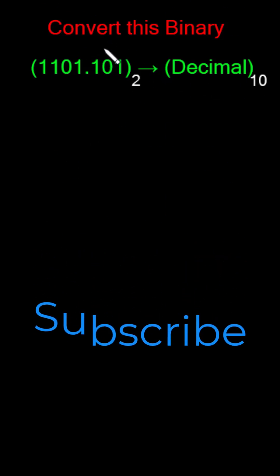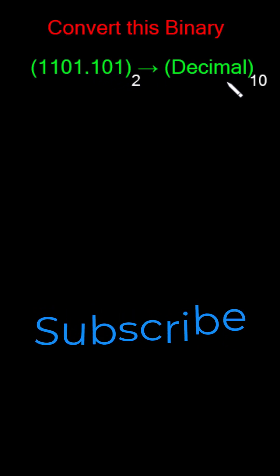In this question we have been asked to convert this binary number 1101.101 to decimal equivalent. In order to do so, you need to remember one thing that regardless of the base, whatever the base, if it is 2, 3, 4, whatever, when we have to convert that into decimal we're going to multiply these coefficients with this base.